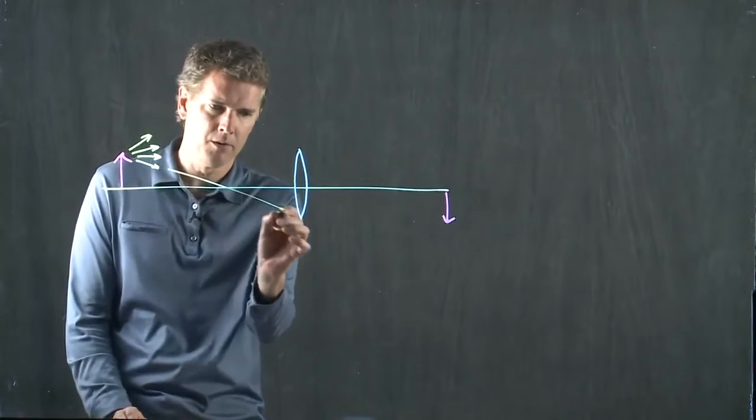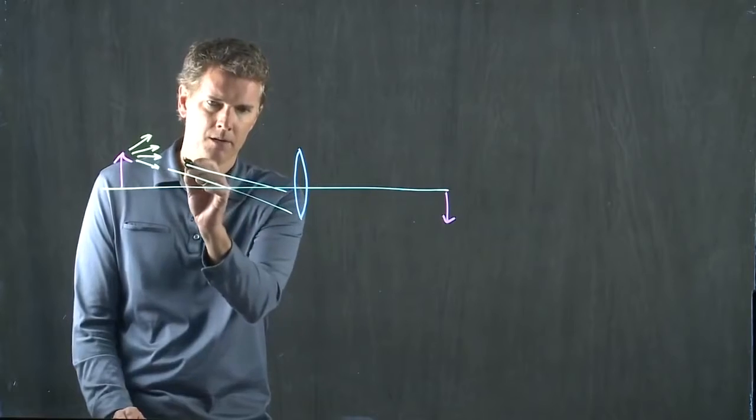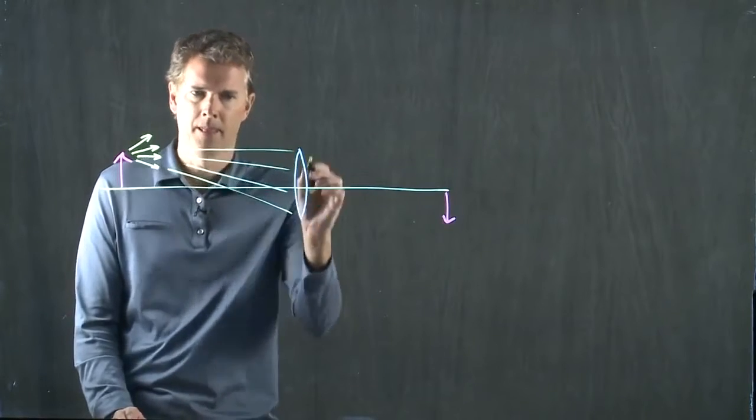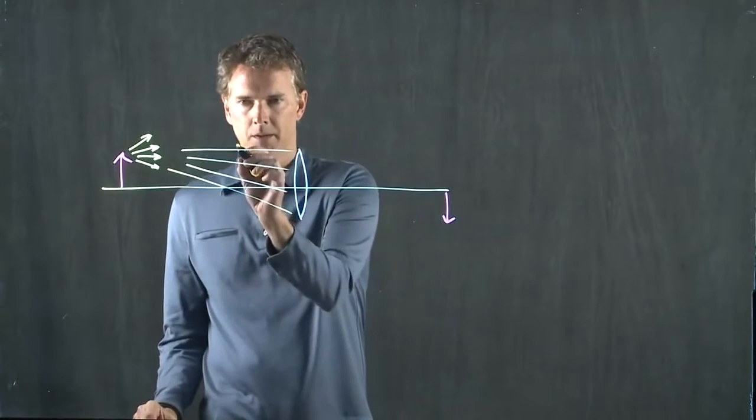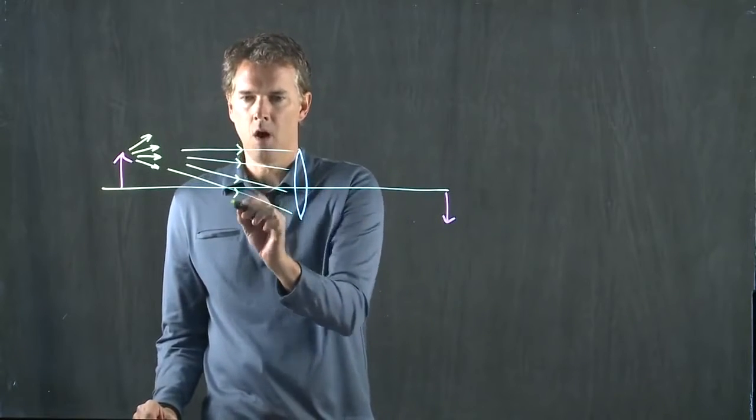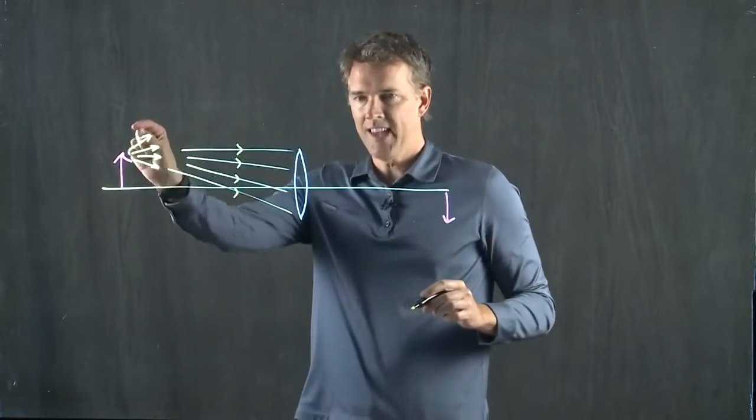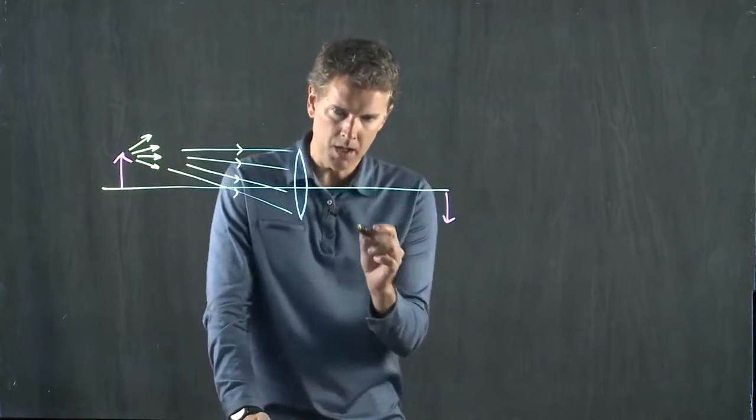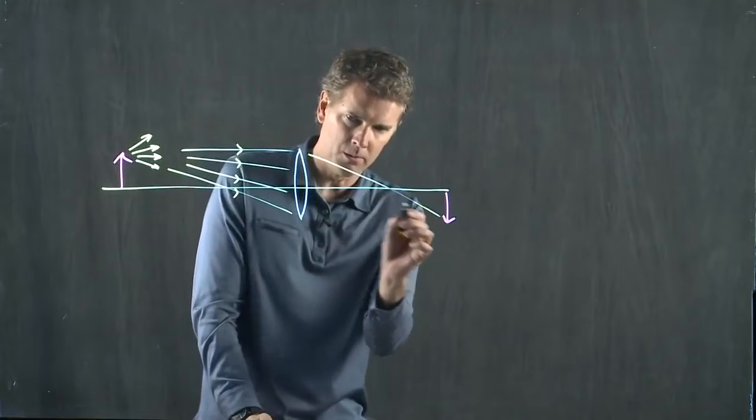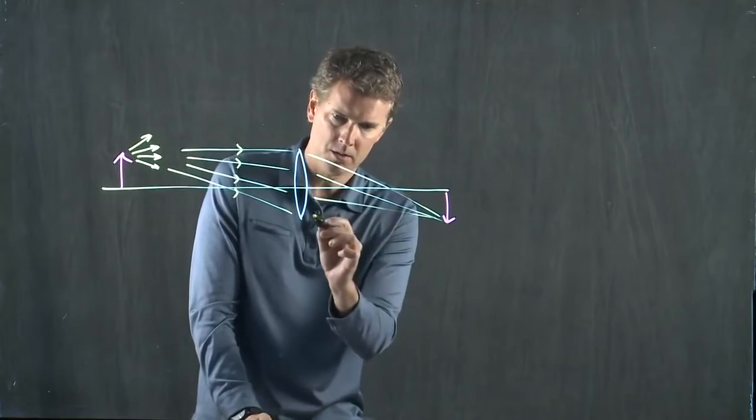I drew four rays here that are coming to the lens. All four of those rays came from the tip of the object, which means they all go back to the tip of the image.